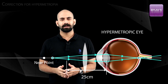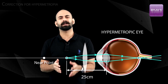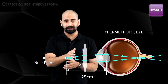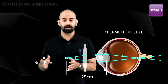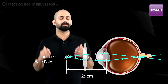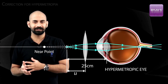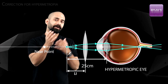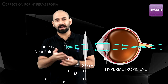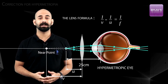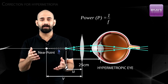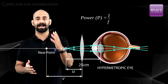To find the required power: assume the worst case — the object is 25 centimeters from the eye. The lens must form an image at the near point of the hypermetropic eye. With the object distance and the near point as the image distance, you use the lens formula to calculate the focal length and therefore the power needed to correct this hypermetropic eye.